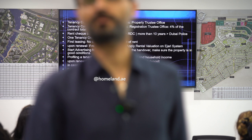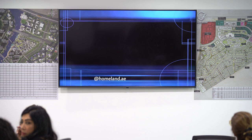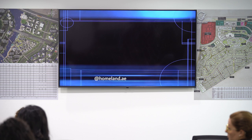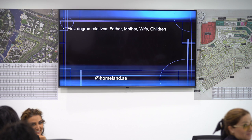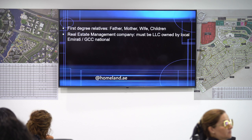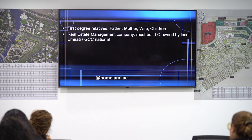First-degree relatives are: father, mother, wife, and children. To have a real estate management license, the company must be an LLC owned by a local Emirati or GCC National. A sole establishment company — even if owned by an Emirati — cannot obtain a real estate management license. The standard measurement system is square meters.